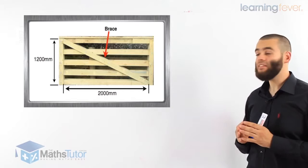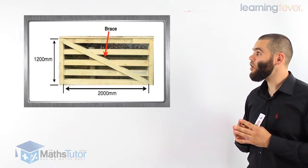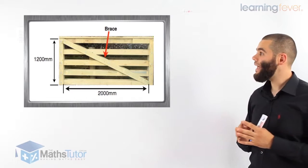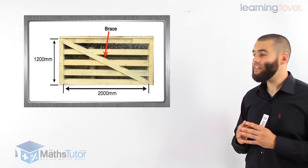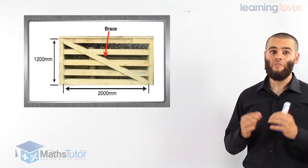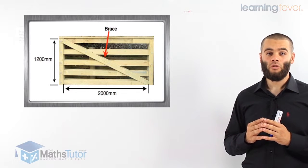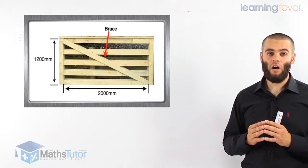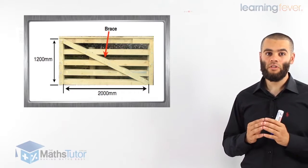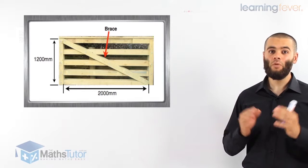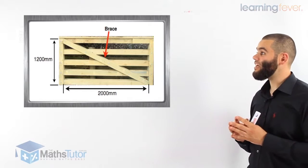Here we have a gate that we're going to construct. The gate has 1,200 millimeters in height and 2,000 millimeters in width. To construct this gate and make it firm, stable, and strong, we have to construct a diagonal to make sure that the angles of this gate, when we're opening and closing it, don't go awkward and are always 90 degrees. So we construct what we call a brace, which in this case is a diagonal.